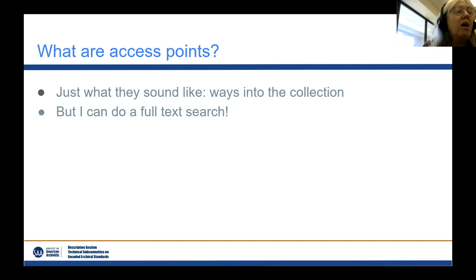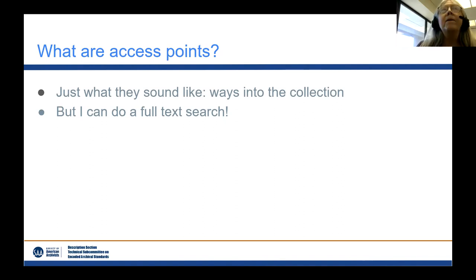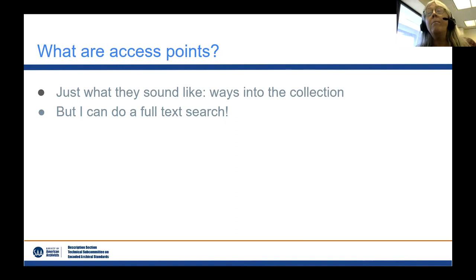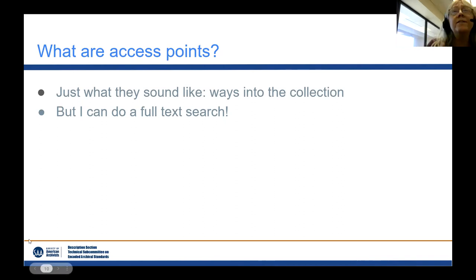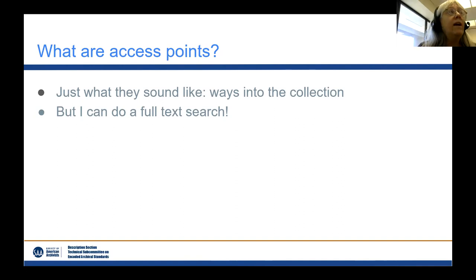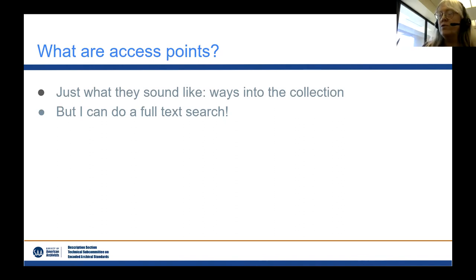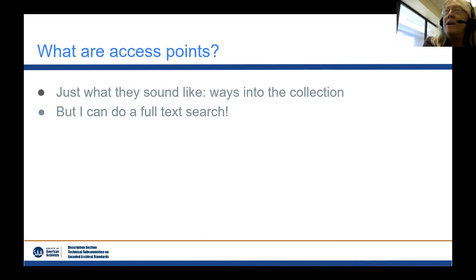You can also think about hard-to-find topics that might be of interest to a small group of people — for example, Freemasonry. You might only have one or two items in a collection that relate to that, but they might be worth calling out because of how hard they are to find otherwise. Now you may be saying to yourself, but I can do a full-text search — why do I need specific access points? For example, I did a search on the term 'green buildings' and in addition to relevant items, I also got a whole lot of hits from novels where someone was driving past a green building. That is not helpful.